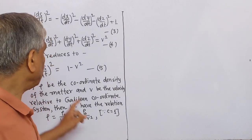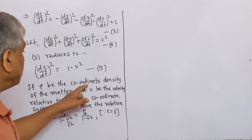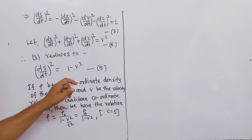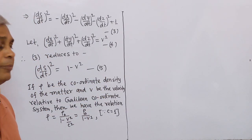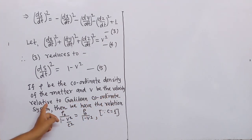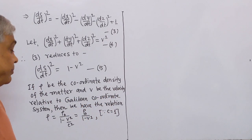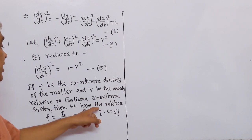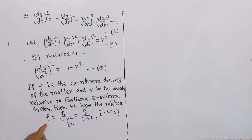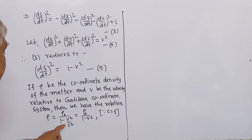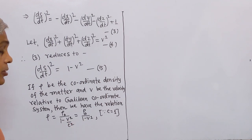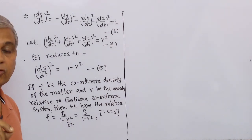If ρ be the coordinate density of the matter and v be the velocity relative to the Galilean coordinate system, then we have the relation: ρ = ρ₀ / √(1 − v²/C²). This is equation (5).